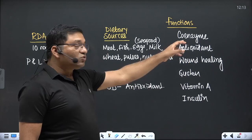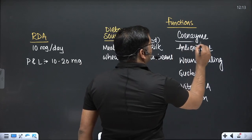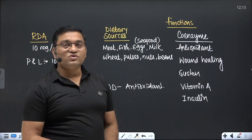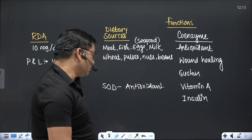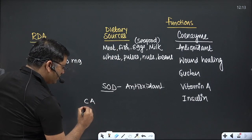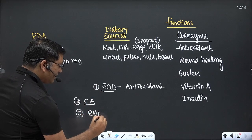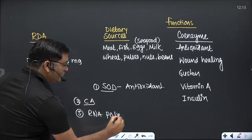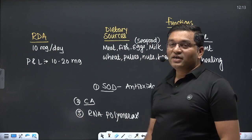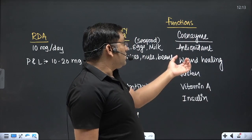Zinc serves as a cofactor or prosthetic group for carbonic anhydrase, superoxide dismutase, RNA polymerase, a number of dehydrogenases including alcohol dehydrogenase and lactate dehydrogenase, and alkaline phosphatase. It is important in more than 300 enzymes, making it a very critical mineral.